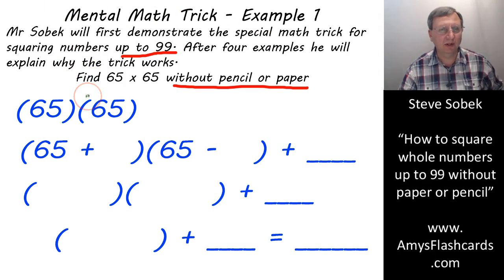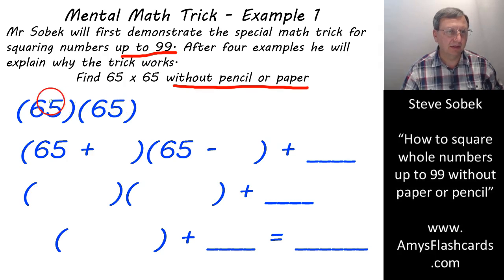At the end I'll show you why it works. I'll prove to you that this trick is always going to give you the correct answer. Let's start with this example. Suppose we'd like to square 65. The square number by definition means to multiply that number by itself, so 65 squared means find 65 times 65. Now the average person can't multiply 65 times 65 in their head. That's tough.